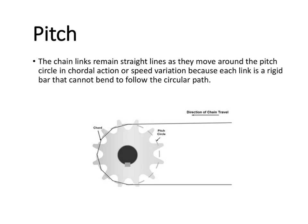Just like gears, we have a pitch with our sprockets. A little bit different though, in the fact that the chain links remain straight lines. So as they move around the pitch circle in a chordal action — basically a speed variation — it's because the links stay rigid and so they can't bend and go in that complete circular path.